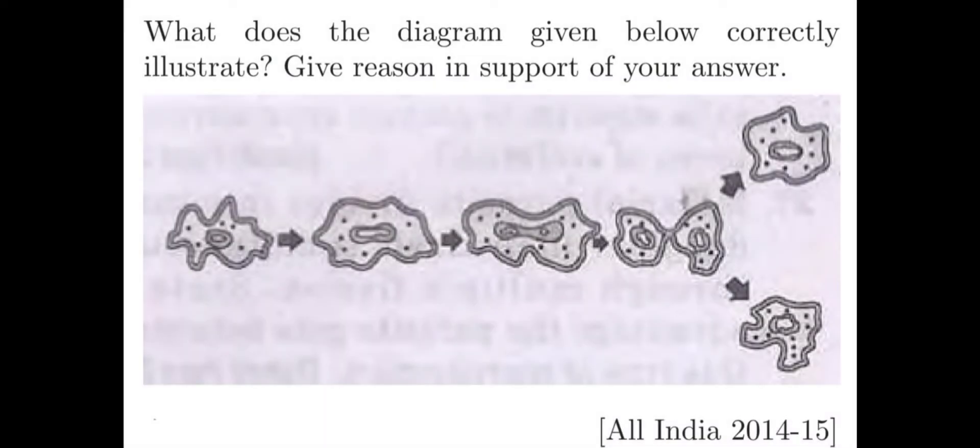Question number one. What does the diagram given below correctly illustrate? Give reason in support of your answer. Observe the diagram carefully and recollect what are all the points related to this diagram. By looking at this diagram you can say this diagram shows the binary fission in amoeba. It's a kind of asexual reproduction. One cell divides into two and first the nuclear division occurs and then the cytoplasm also divides. As a result two daughter cells are produced.